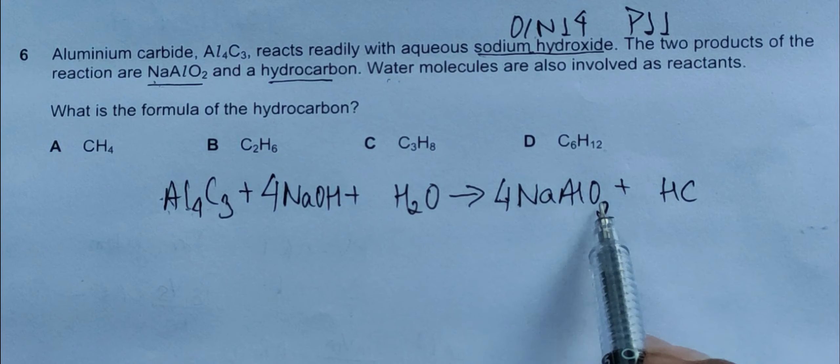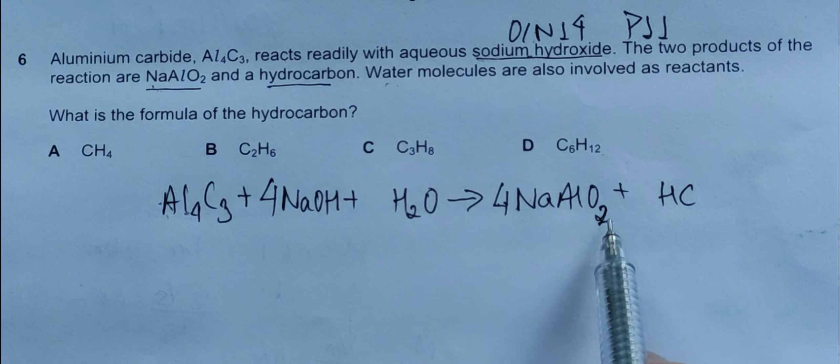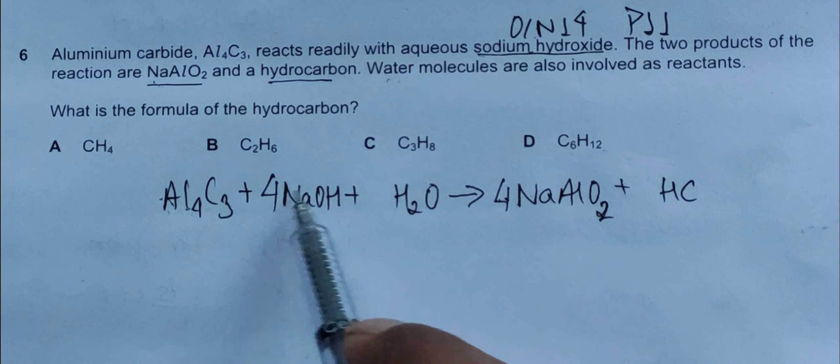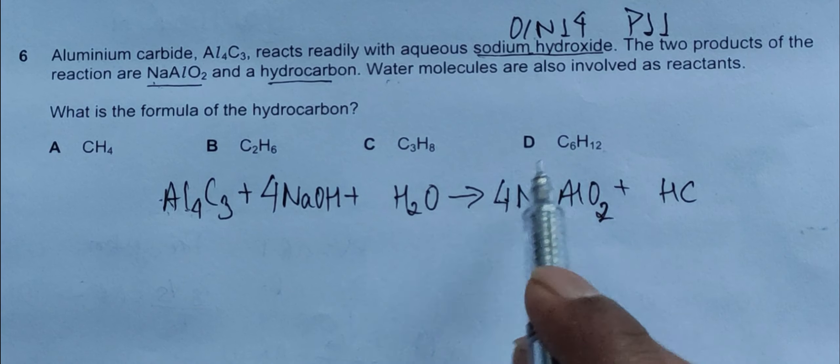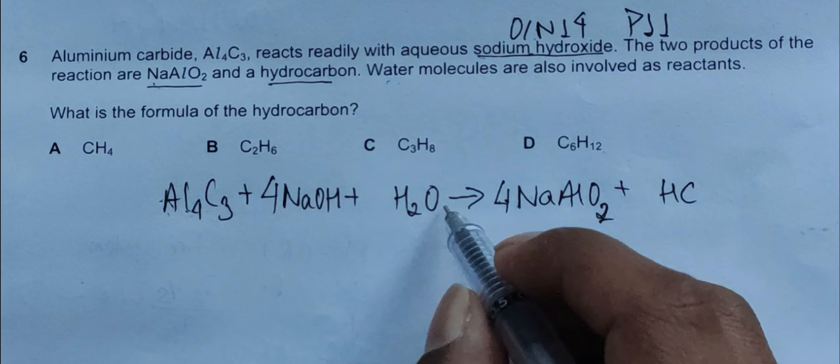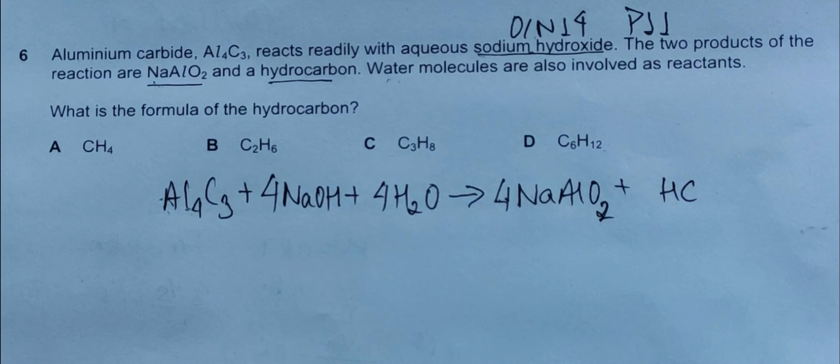Now let's balance the oxygen. We have a total of eight oxygen on the product side and four and five oxygen on the reactant side. So we need to have a total of eight, and adding four does the job for us.